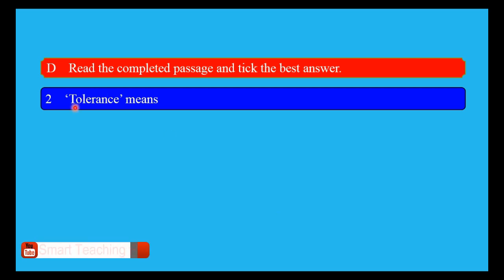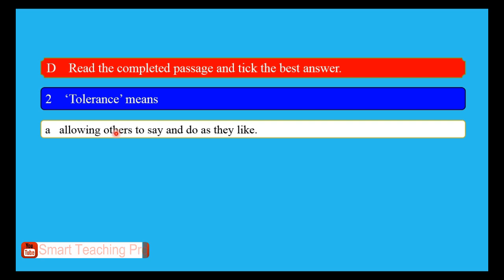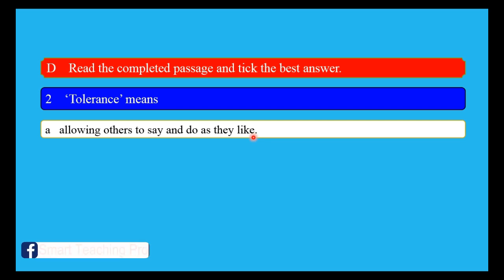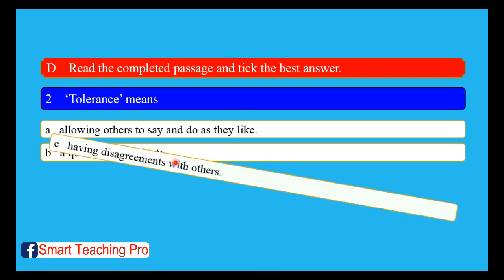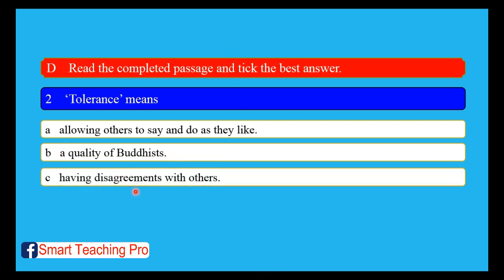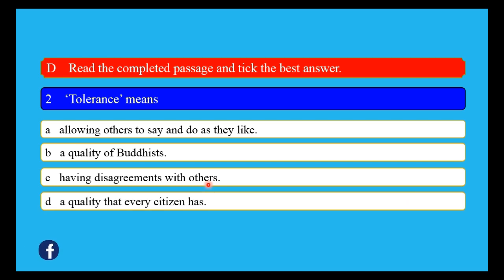5. Tolerance means allowing others to say and do as they like. 5. A quality of Buddhist. 6. Having disagreements with others. 6. A quality that every citizen has — this is the correct answer for the comprehension.